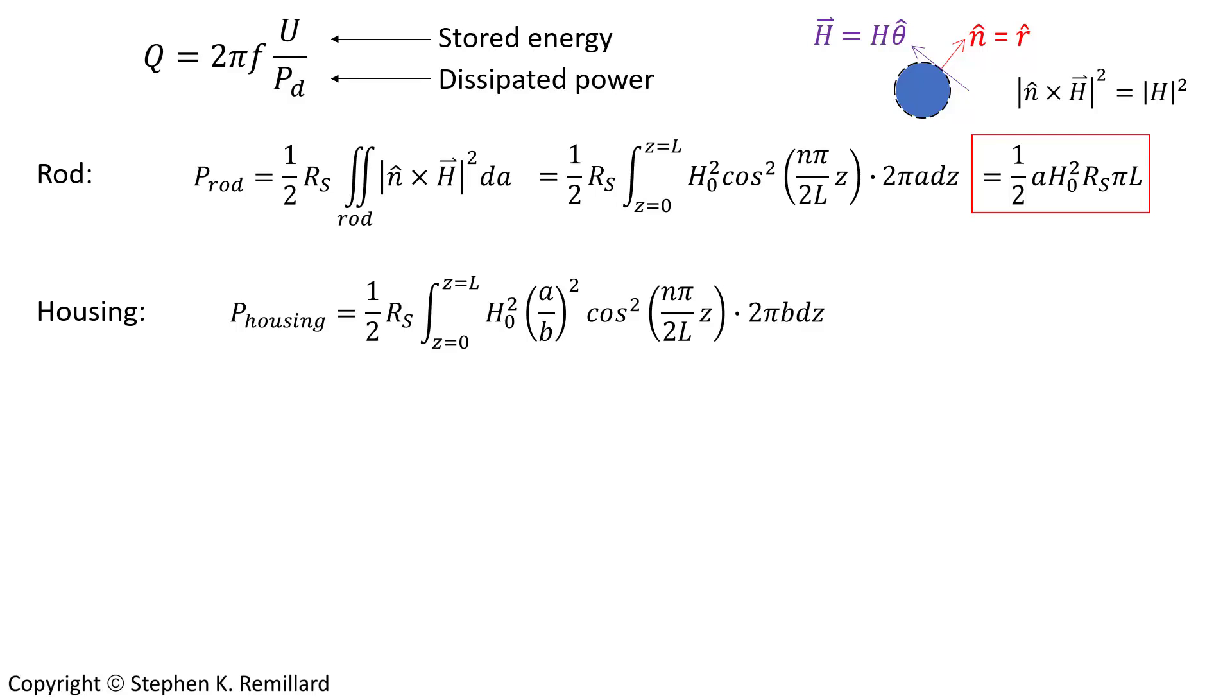The power dissipated in the housing, which is the outer wall, assuming it to be cylindrical, can be set up with an area element of 2 pi b dz. It's otherwise the same integral, but inspect that expression for magnetic field evaluated at r equals b, and make sure that that's what you have inside the integral. To solve the integral, you have the power dissipated in the housing.